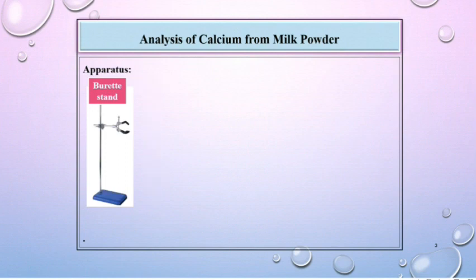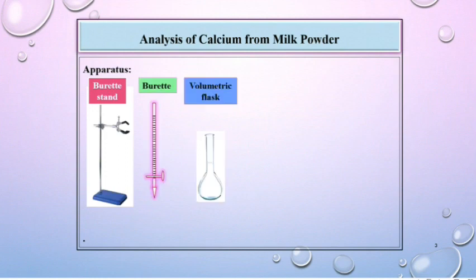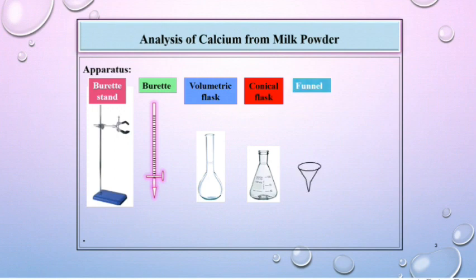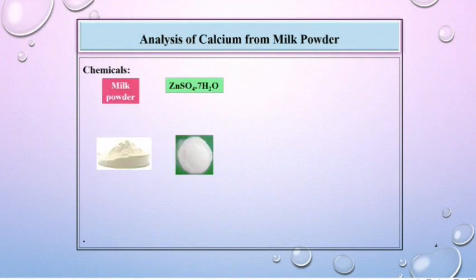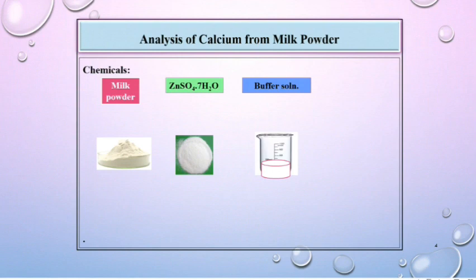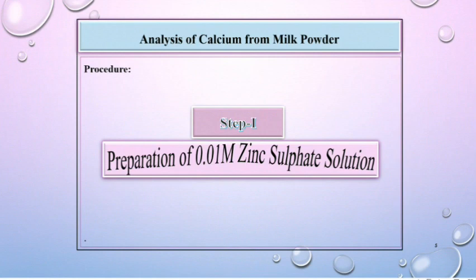Apparatus required: burette stand, burette, volumetric flask, conical flask, funnel, beaker, etc. Chemicals required: milk powder, zinc sulfate, buffer solution, and eriochrome black T indicator.